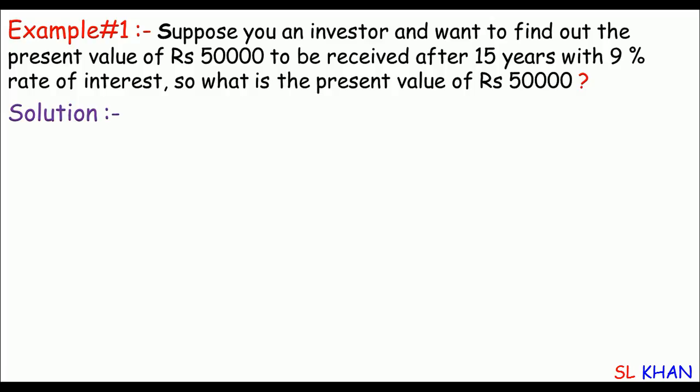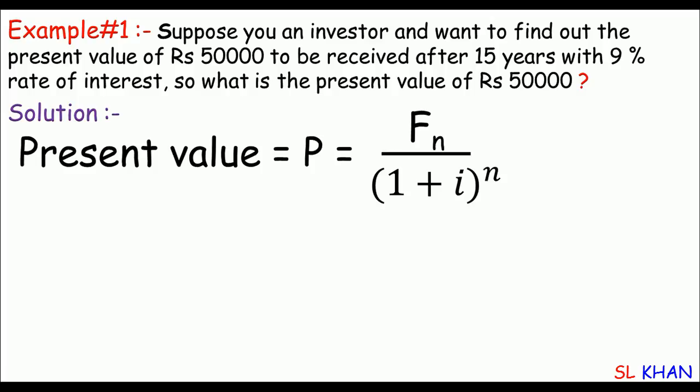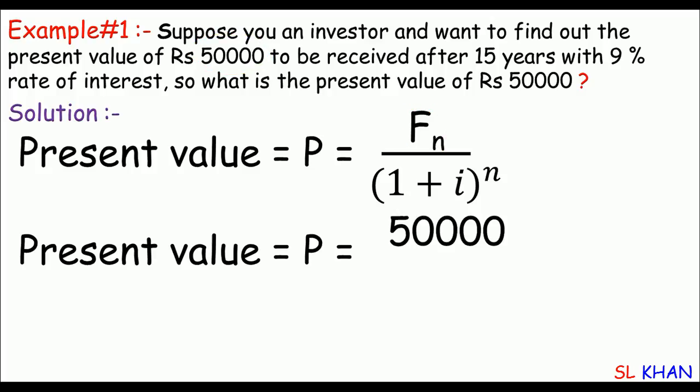To determine the present value, we have a nice plug-and-chug formula: P = F/(1 + i)^n. We just need to plug in: P equals F which is known, that's 50,000, divided by 1 plus i. i is the rate of interest which is 9%, or 0.09, raised to power n, that's fifteen years.